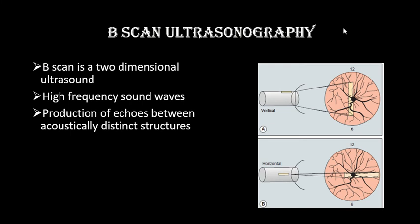The third investigation is B-scan ultrasonography, performed to diagnose retinal pathologies in cases of hazy media or media obstruction — such as corneal opacities, cataract, or vitreous hemorrhage — where we cannot directly see the retina. B-scan is a two-dimensional ultrasound that shows the length and height of structures. The probe uses different megahertz frequencies: certain probes for ocular pathologies and higher frequency probes for orbital pathologies.